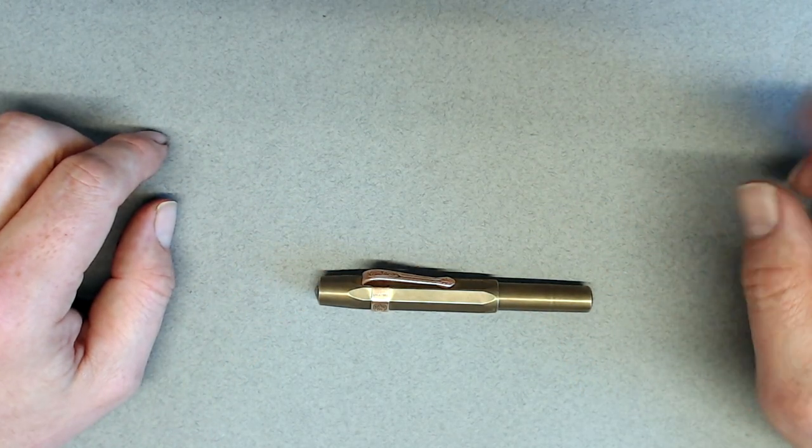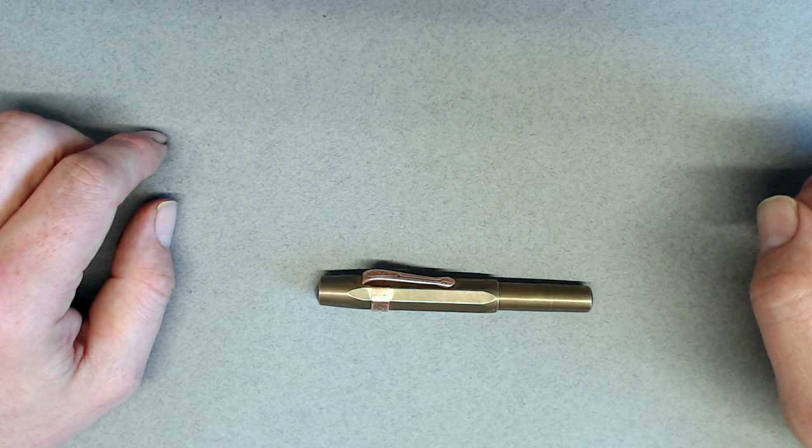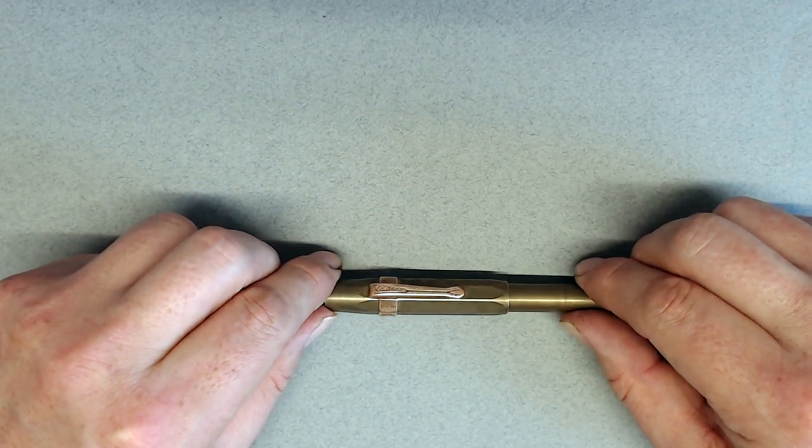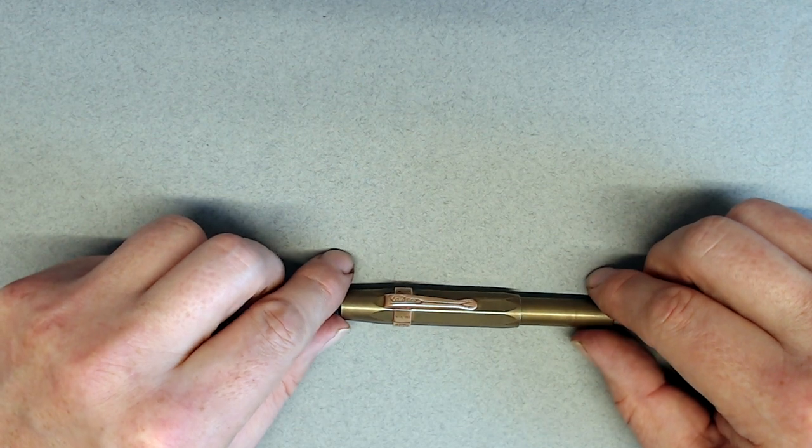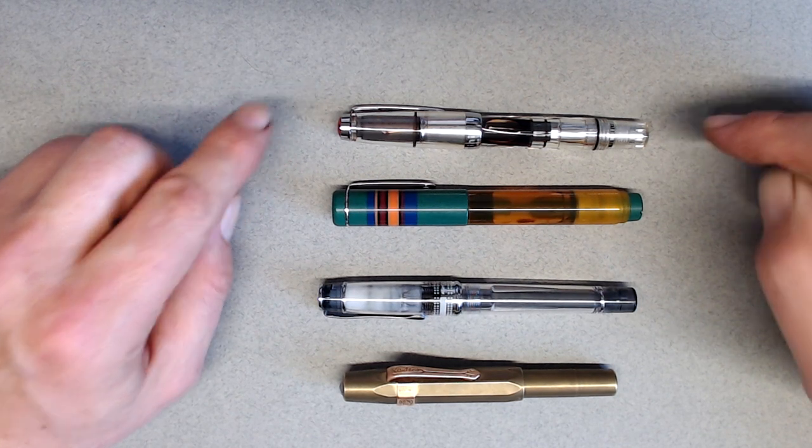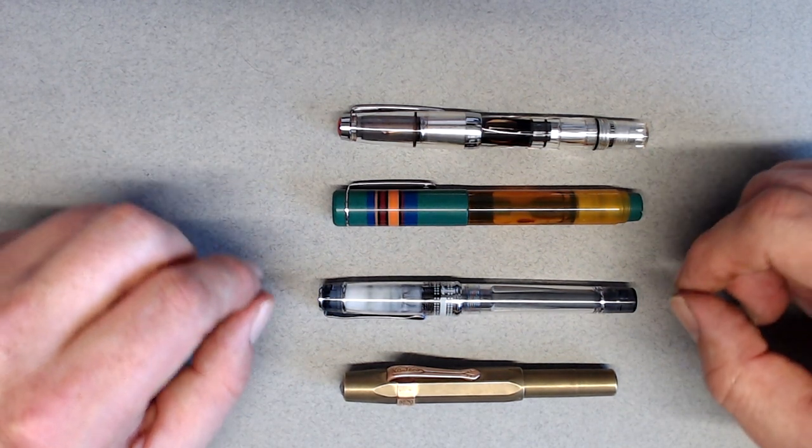So why, despite this pen's popularity, did I hold off buying it? Well, just look at it. It's tiny, even when compared to other pocket pens being only ten and a half centimeters long. Here it is next to a few other pocket pens, the Twsbi Mini, the Opus 88 Fantasia, and the Pilot Prera.